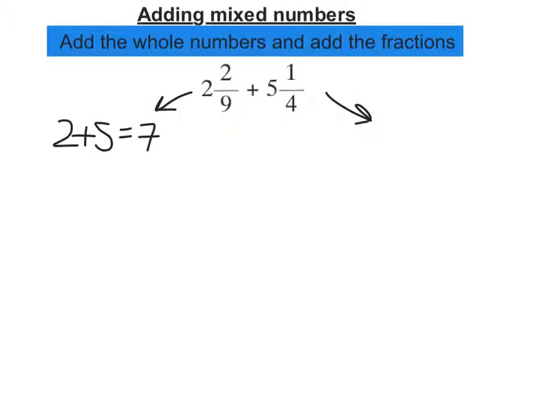And then if we add together the fractions, so we've got 2 ninths plus a quarter. So we're looking for the lowest common multiple of 9 and 4, well, the first number that appears in both their times table is 36.